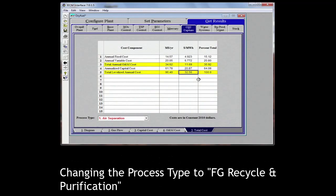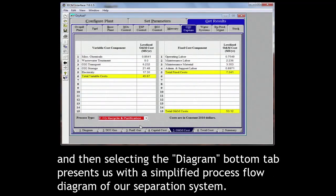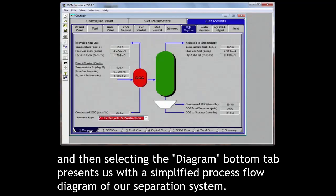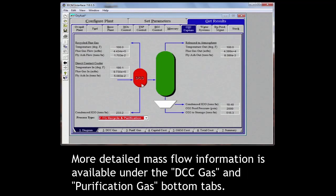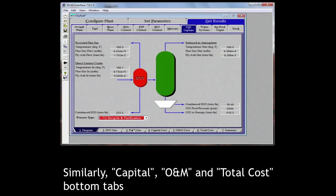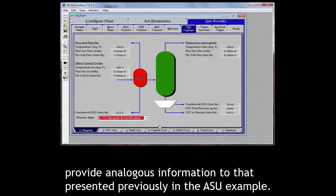Changing the process type to FG recycle and purification and then selecting the diagram bottom tab presents us with a simplified process flow diagram of our separation system. More detailed mass flow information is available under the DCC gas and purification gas bottom tabs. Similarly, capital, O and M and total cost bottom tabs provide analogous information to that presented previously in the ASU example.